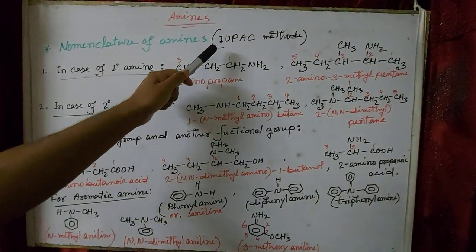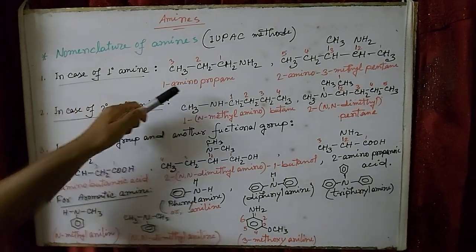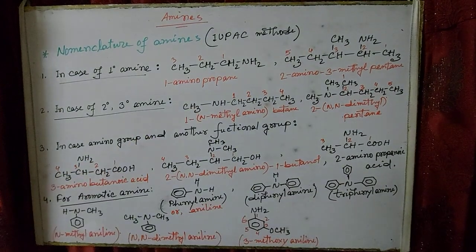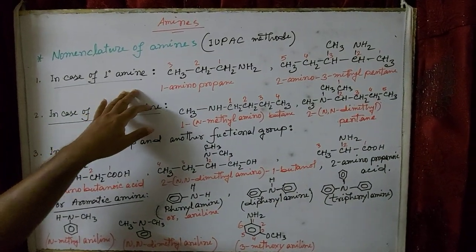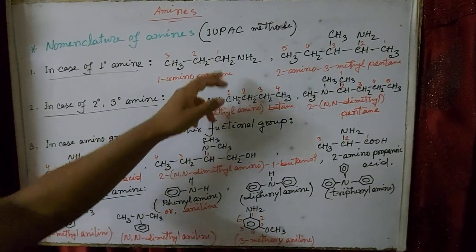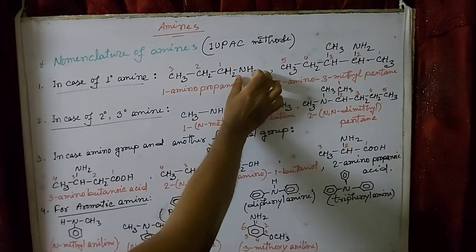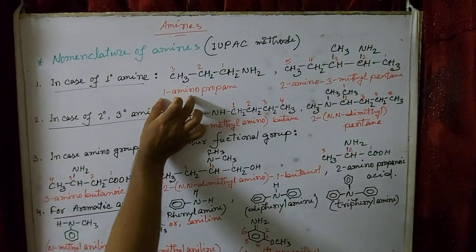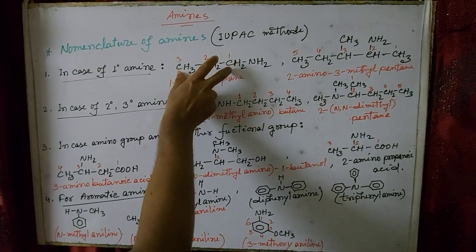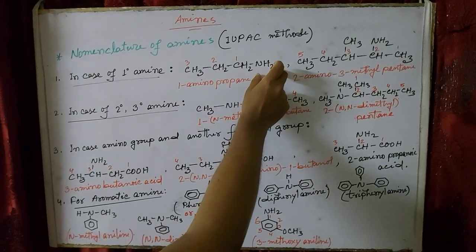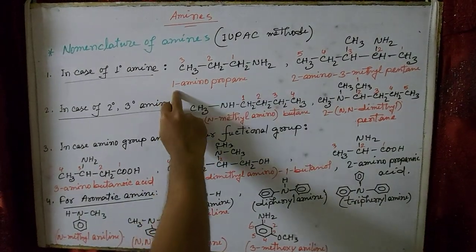Today we cover the naming process of amines using the IUPAC method. For a primary (1°) amine, if one hydrogen atom of ammonia is replaced by an alkyl group, it is known as a 1° amine. The NH2 group is the amino functional group. During numbering of carbon atoms, I prefer the position of the functional group and start numbering from the nearest side. That is why this compound is named 1-aminopropane.